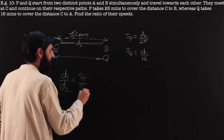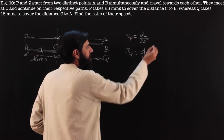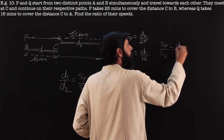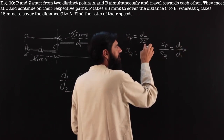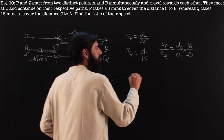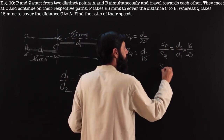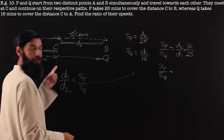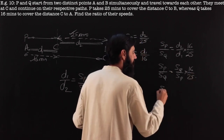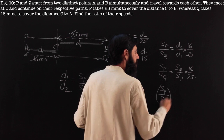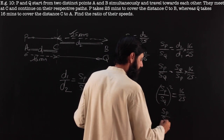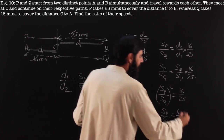Taking the ratio of speed of P over speed of Q: we get (D2/25) divided by (D1/16), which equals (D2/D1) × (16/25). Since D1/D2 equals the ratio of speed of Q to speed of P, substituting gives us (speed P / speed Q)² = 16/25. Taking the square root, the ratio of speeds of P to Q is 4 to 5.